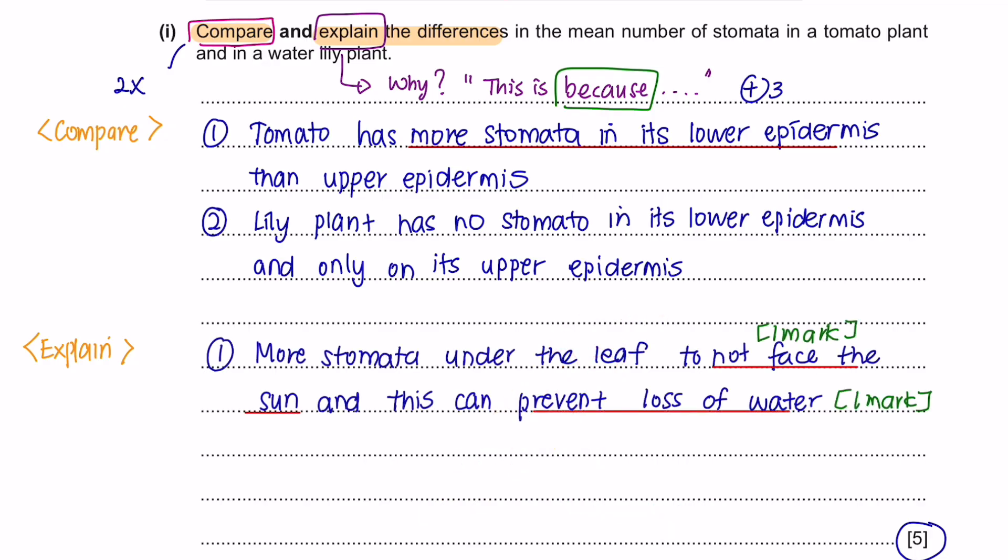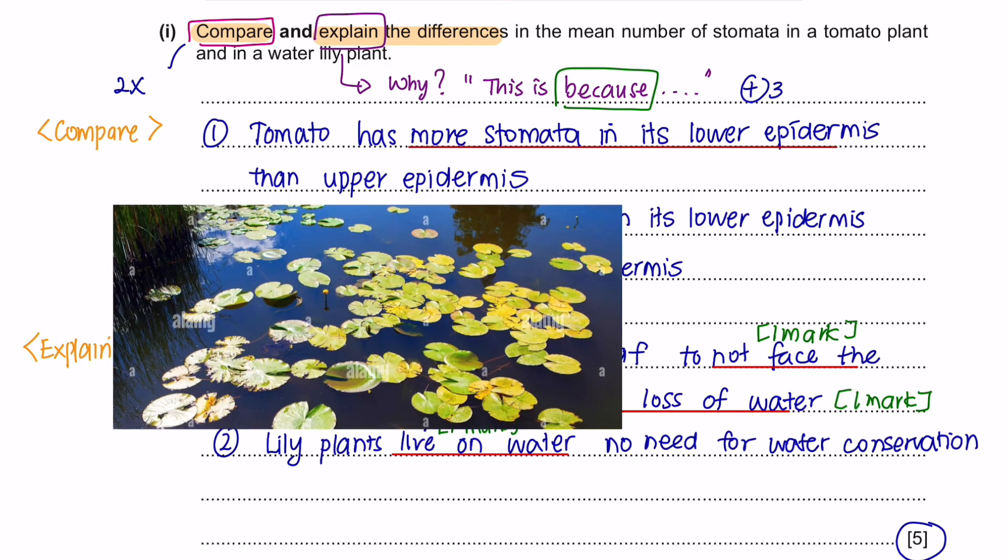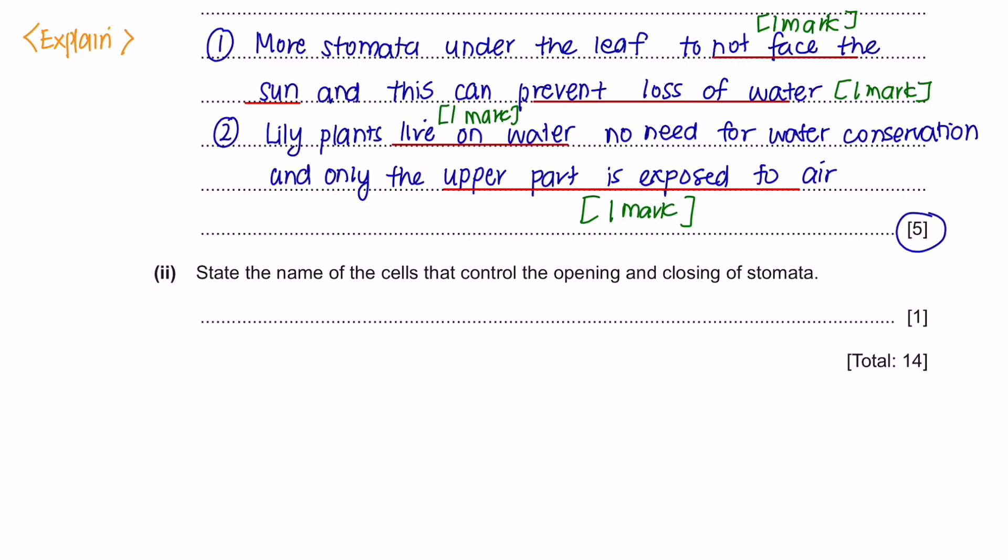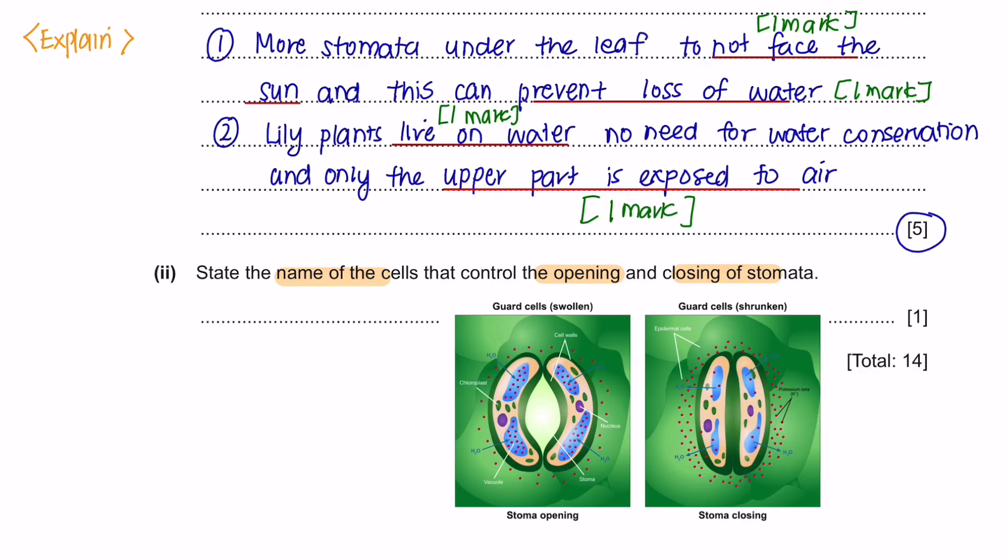And now we're going to give a reason why lily plant has only stomata on its upper epidermis. Lily plants live on a surface of water, meaning that there is no need to conserve any water here. And since they are floating on their water, only the upper part of the leaf are exposed to the air. Hence why the stomata is only on the upper part. And this way the oxygen can leave. Question part 2. State the name of the cells that control the opening and closing of a stomata. The cell responsible for this is called the guard cells.